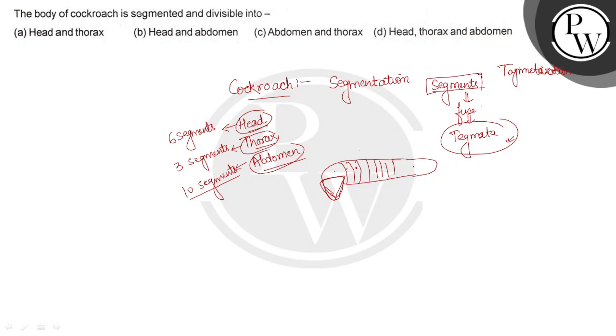Body of a cockroach is divided into head, thorax and abdomen. So the right answer of this question is option D. Thank you.